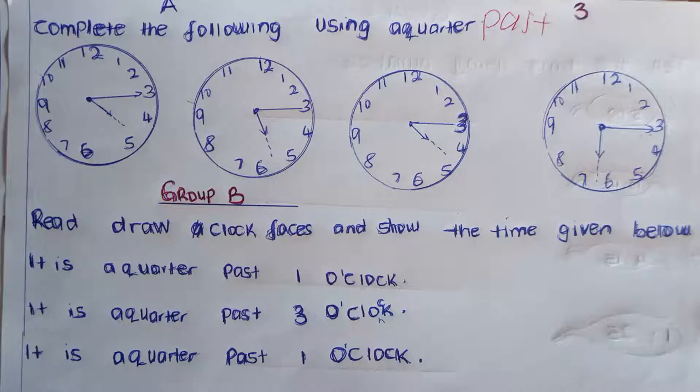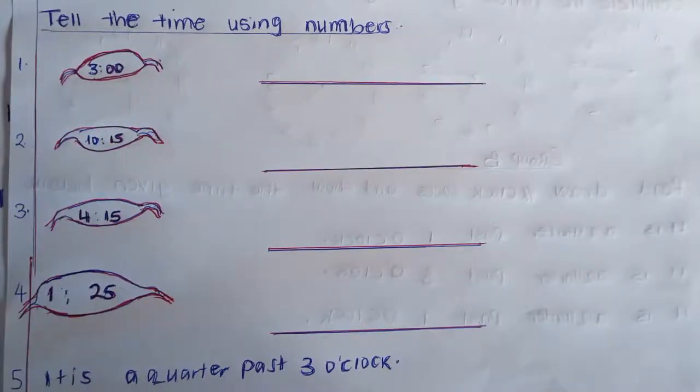Group B, you are supposed to draw the clock faces and show that time written below. A quarter past one o'clock — if the long hand is facing three and the short one is past one, give yourself a tick. Number two: if the long one is facing three and the short one is past three. Lastly, if the long one is in three and the short one is past one, give yourself a tick. Thank you very much. Thank you, Group C.